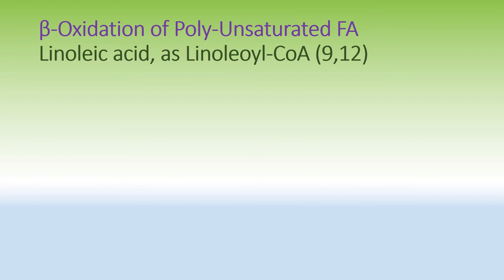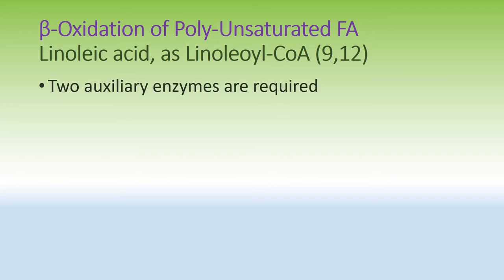Now we look at the example of beta oxidation of a polyunsaturated fatty acid. Previously we discussed oleic acid, a monounsaturated fatty acid. Now it is linoleic acid, which has two double bonds — one at carbon nine and the second at carbon twelve. It is converted into linoleoyl-CoA in the cytosol and then enters the mitochondria.